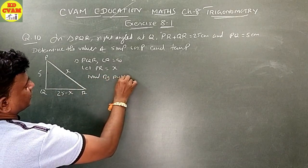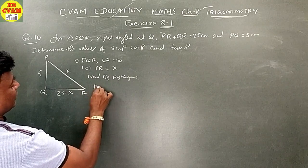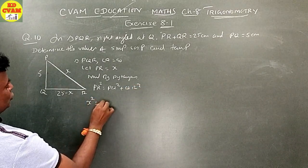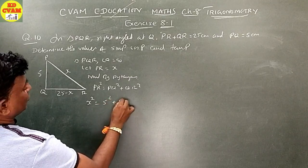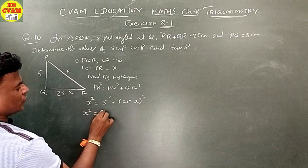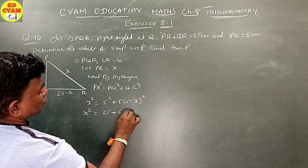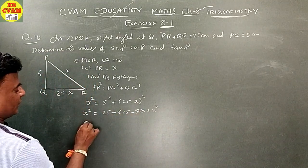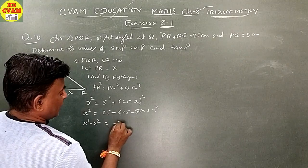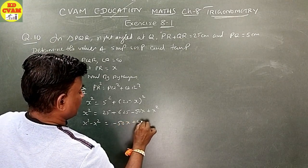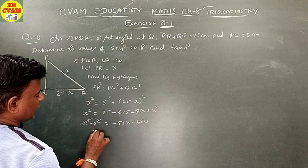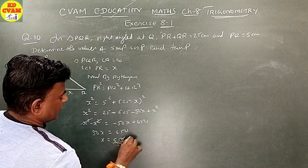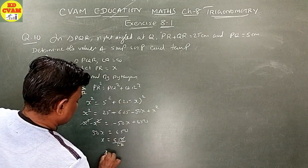By Pythagoras, PR square equals PQ square plus QR square. So X squared equals 5 squared plus (25 minus X) squared. X squared equals 25 plus 625 minus 50X plus X squared. X squared cancels, giving 50X equals 650, so X equals 13.